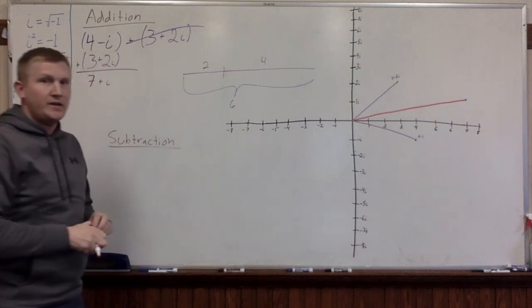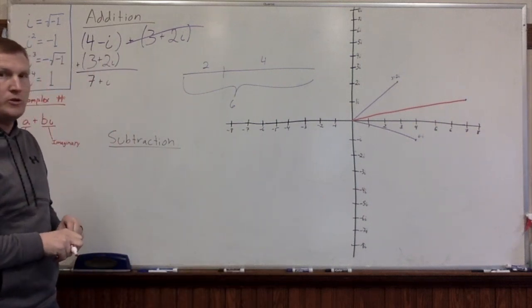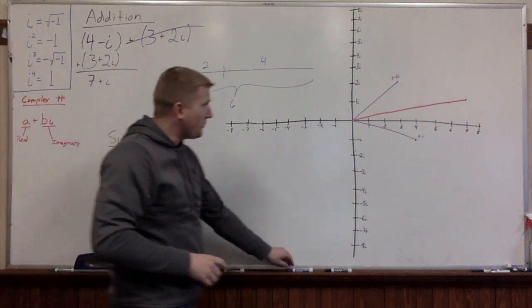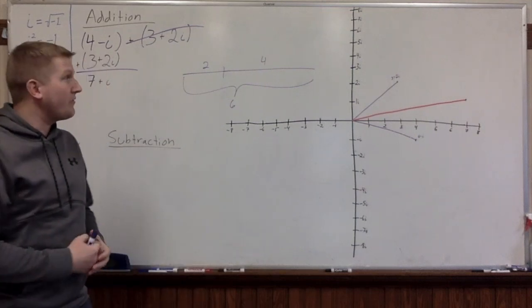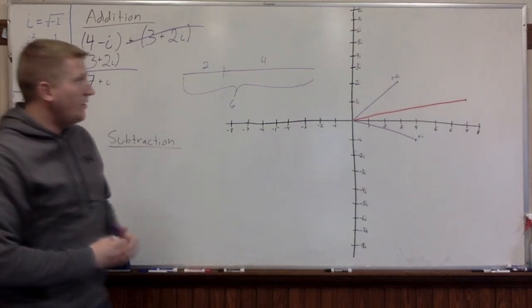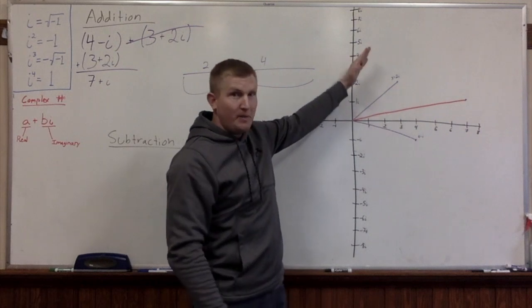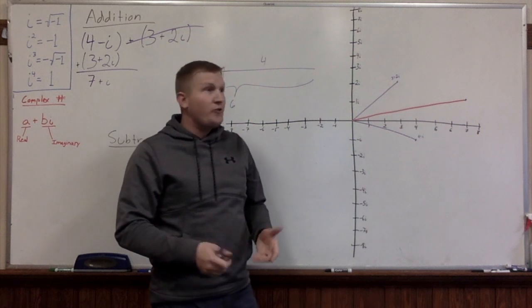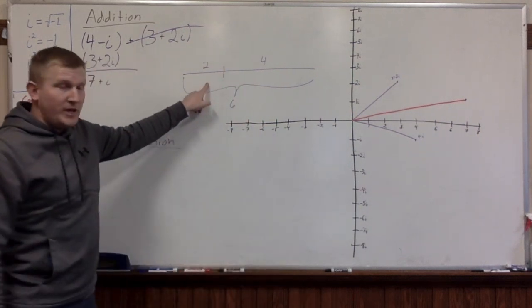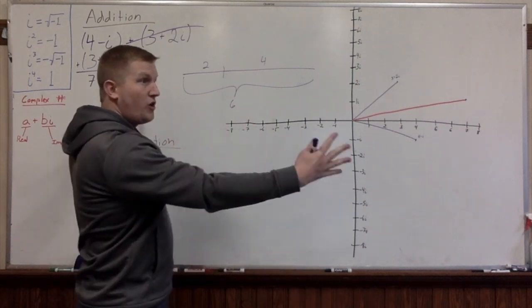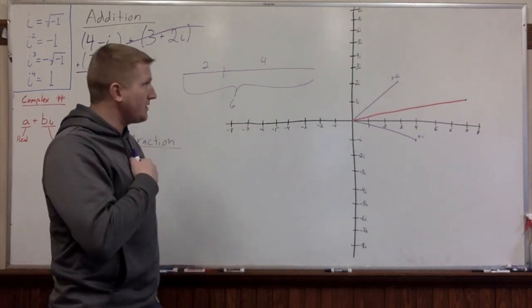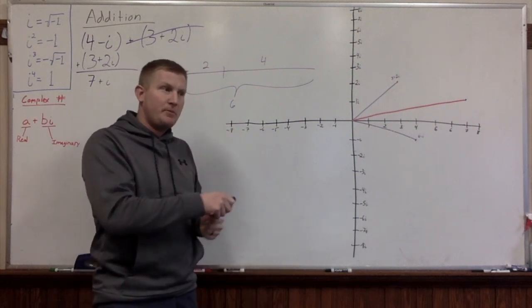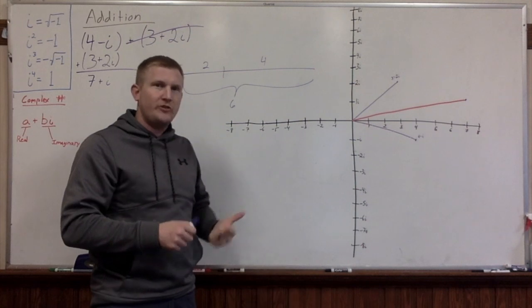That red line represents the sum of those two numbers that have both distance and direction. This direction is kind of down a little bit, this direction is up a bit, so it makes sense that the resulting direction is somewhere in between. What's also really cool is the stick model — if we add them end to end, keeping in mind the direction, we can do the same thing with complex numbers.